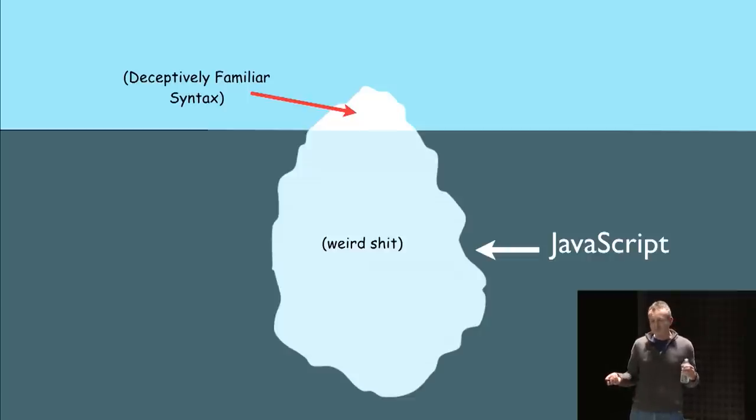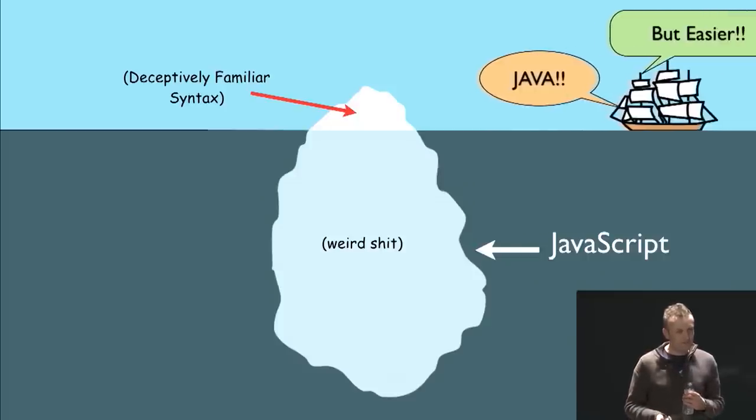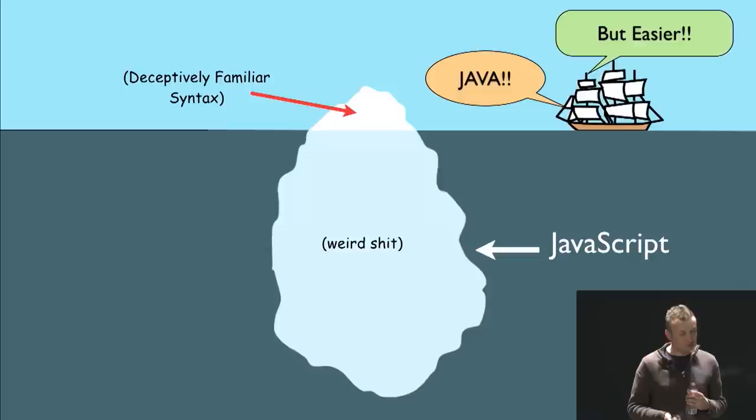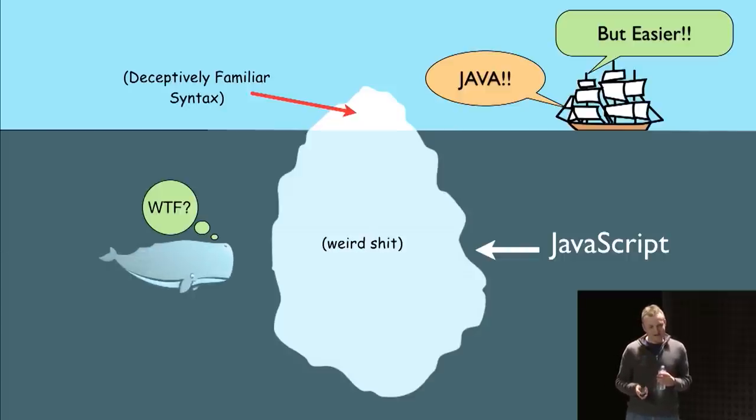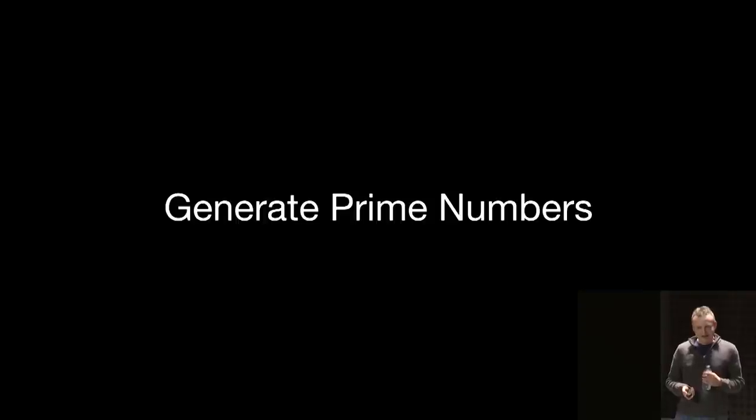So you come to JavaScript and you've got this familiar syntax. You say, oh, there's someone who comes along and they say, oh, other. But it's easier. It's easier because there's no types. You just declare a variable as a var. So what can be easier? It's easier. And then this guy comes along and it's like... Yeah.